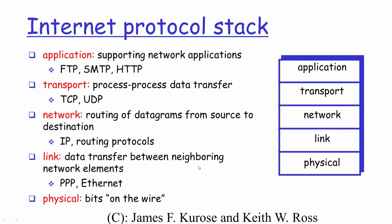In the internet protocol stack you typically have 5 layers: starting from the bottom, the physical layer, then the data link layer, the network layer, the transport layer, and the application layer. In the theoretical OSI 7-layer model there are 2 more layers sandwiched between transport and application — the presentation layer and the session layer — but in the practical internet protocol stack these are collapsed into the transport layer, with application at the top.